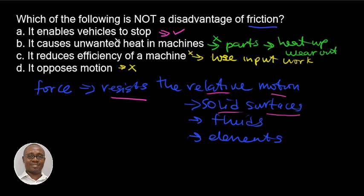But option A is a disadvantage that is put to use by enabling vehicles to stop. So option A is the right answer. Thank you for watching. See you in the next video. Bye bye.